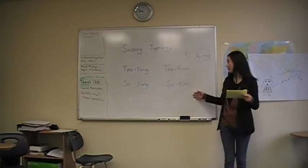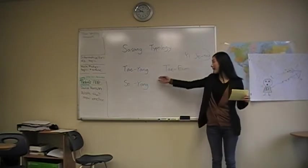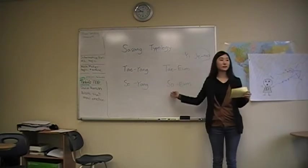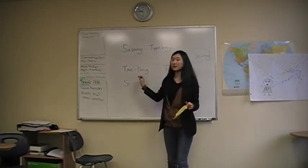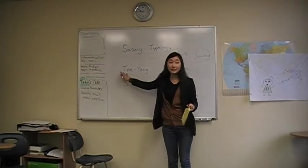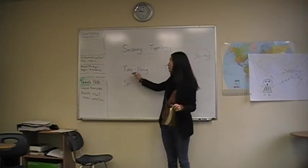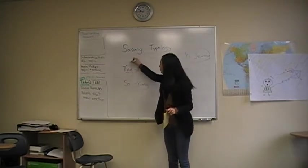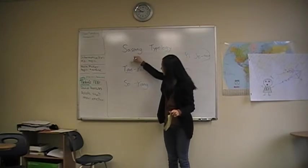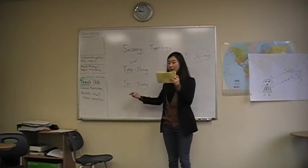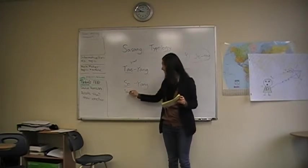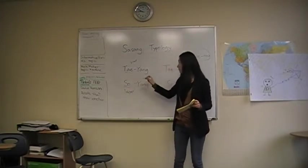And I already wrote down four types. It's Taeyang, Taeun, Soyang, and Soun. Actually, it's from Chinese, a letter from Chinese. Tae means great. And so means less, lesser. So it means greater.